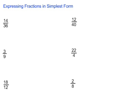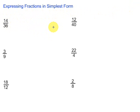Let's take a look at expressing fractions in simplest form. Simplest form means that a fraction is in a form where we cannot divide by the same number on the top and the bottom. In other words, the greatest common factor of the numerator and the denominator is just 1. Then it's in simplest form.